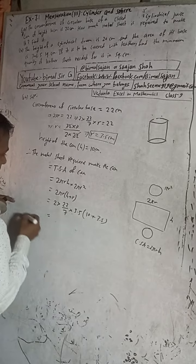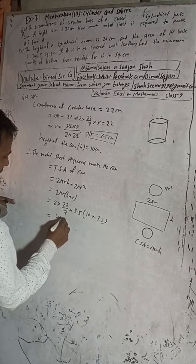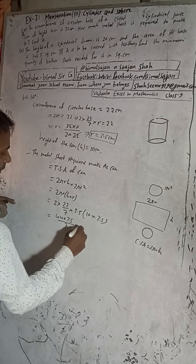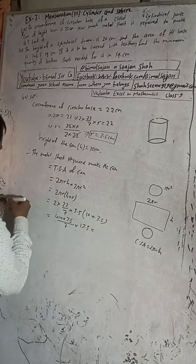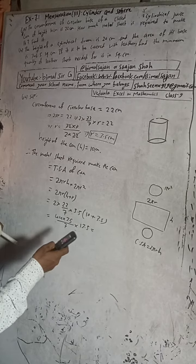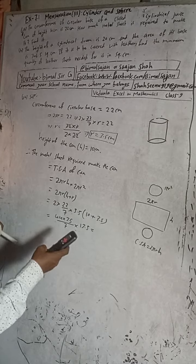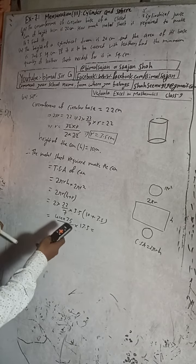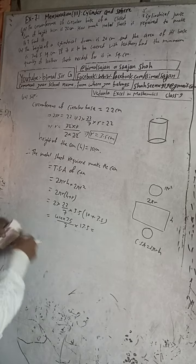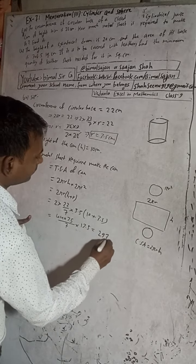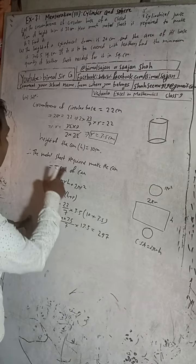Calculating: (22/7) × 2 × 3.5 = 44 × 3.5 / 7. And (10 + 3.5) = 13.5. So: 44 × 3.5 × 13.5 / 7 = 297. Therefore, the total surface area — the metal sheet required to make the can — is 297 cm².